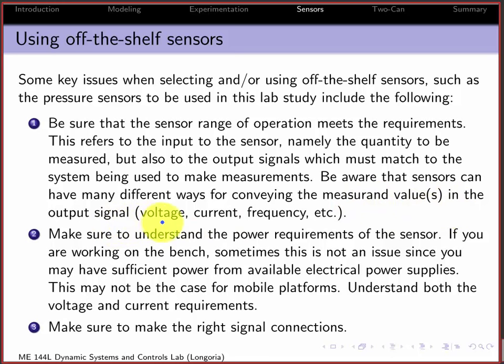Be aware of the sensors can also have many different ways for conveying those values. So when you're selecting a sensor, if you want to measure voltage, make sure that you choose one with voltage output.